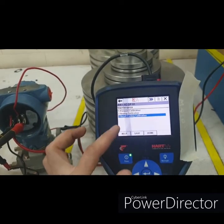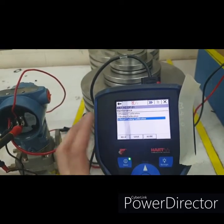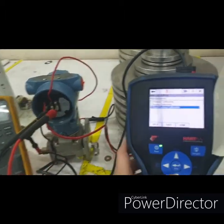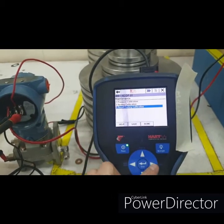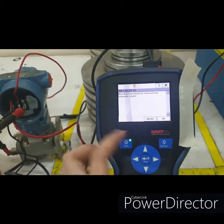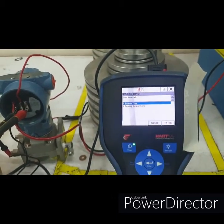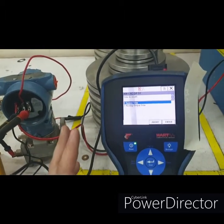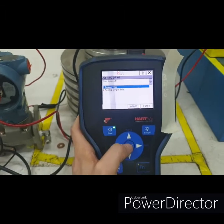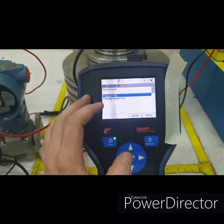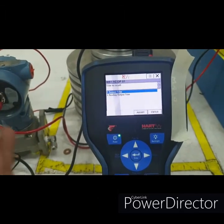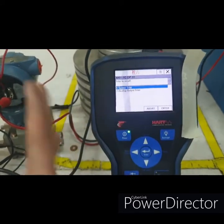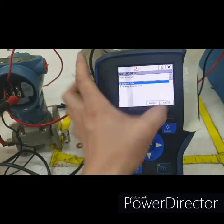Then go to recall factory calibration. So it will go back to the default values. If we have done sensor trimming or analog output trimming, it will go back to the default settings. Restoration of trim values complete.